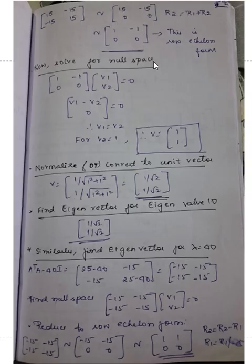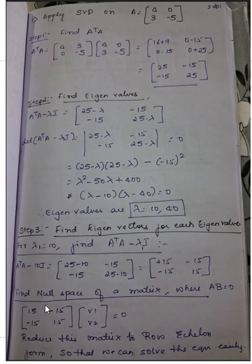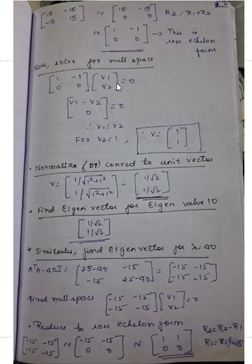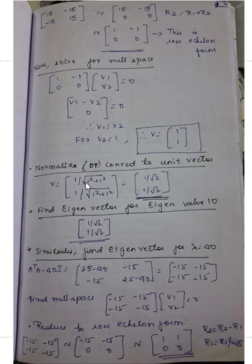Substituting the row echelon form [1, −1; 0, 0] and multiplying with [V1; V2], equating each row to zero gives V1 minus V2 equals zero, so V1 equals V2. Assuming V2 equals 1, V1 equals 1, giving V as [1, 1]. Normalize by dividing each entry by the square root of 1² plus 1², giving the eigenvector as [1/√2, 1/√2] for eigenvalue 10.